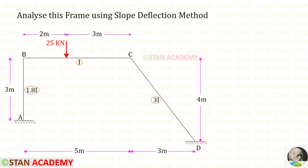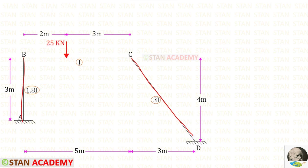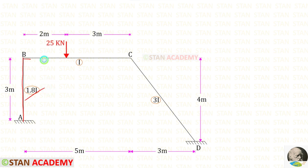Hello everyone. Today we are going to analyze this frame using the slope deflection method. In this frame, there is a vertical member AB, horizontal member BC, and an inclined member CD. In AB and CD, there is no load. In the member BC, there is an eccentric point load of 25 kilo Newton, acting at a distance of 2 meters from joint B. The moment of inertia for AB is 1.8I, for BC it is I, and for CD it is 3I.